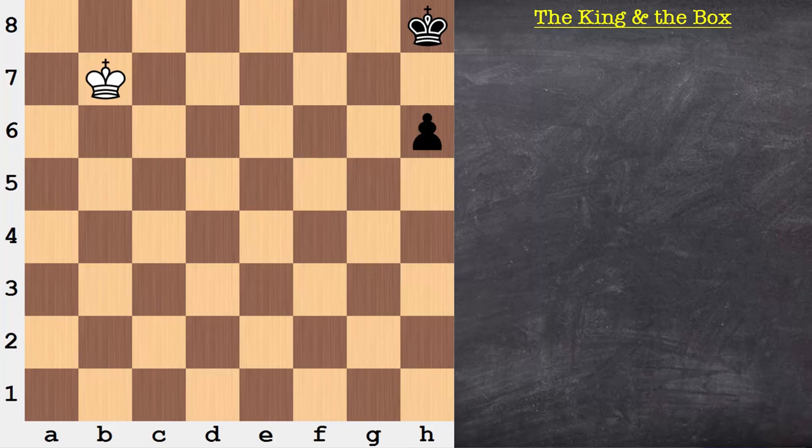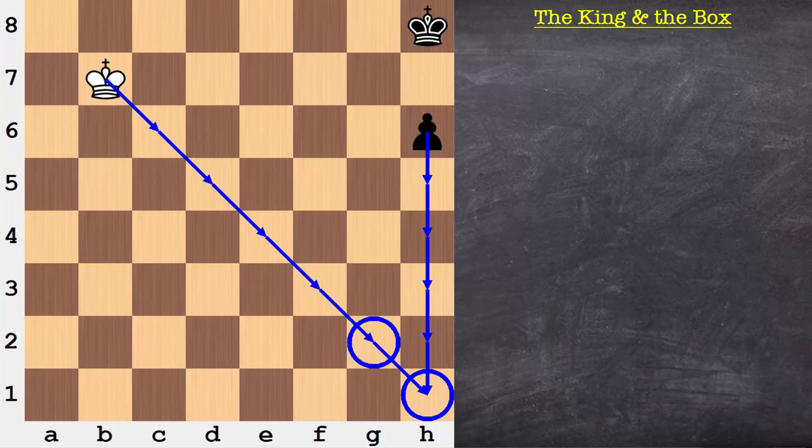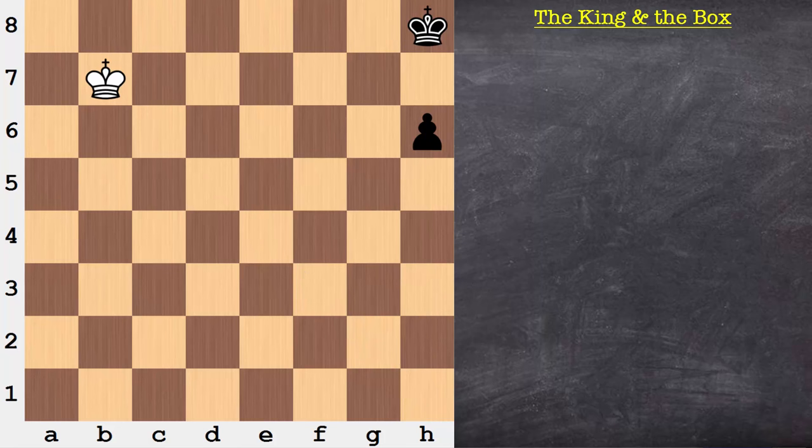There are a couple approaches we could have taken to figure this out. One is to count. One, two, three, four, five. One, two, three, four, five. White would be on move at that point, going from G2 and then making the capture on the H1 square. So we could have counted, we could have maybe visualized both pieces moving, or maybe some combination of the two.